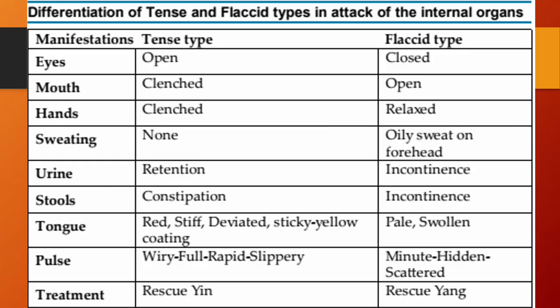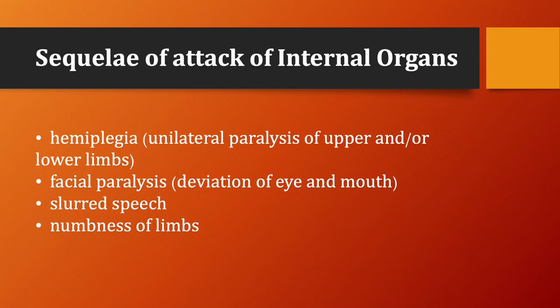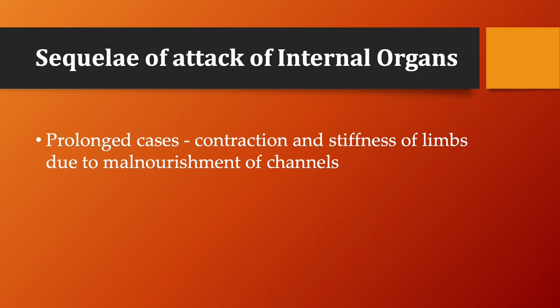This is the table showing the differentiation of tense and flaccid types in attack of the internal organs. Windstroke from attack of the internal organs, whether of the tense or flaccid type, always leaves sequelae if the patient survives. These consist primarily of hemiplegia, which is unilateral paralysis of the upper and/or lower limbs, facial paralysis, deviation of eye and mouth, slurred speech, and numbness of limbs. In prolonged cases, there will also be contraction and stiffness of the limbs due to malnourishment of channels.